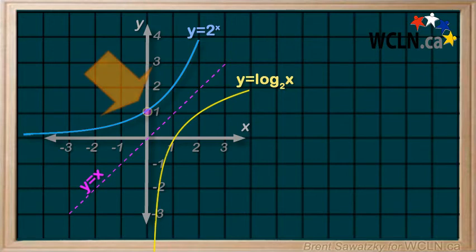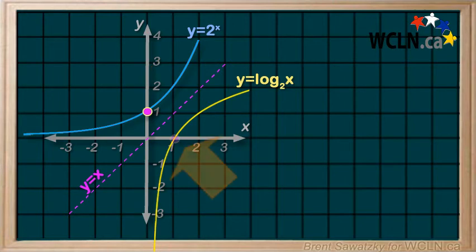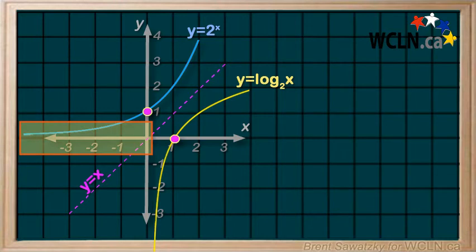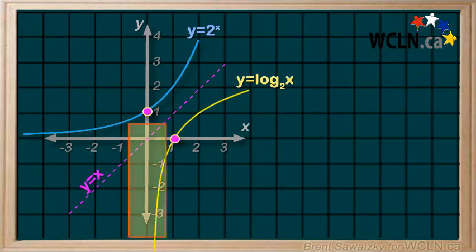Our y-intercept from the exponential function, that is 0 comma 1, becomes an x-intercept in the inverse or log function, 1 comma 0. The asymptote of our exponential function, that was y equals 0, becomes an asymptote for the inverse or log function as x equals 0.